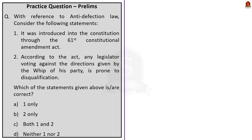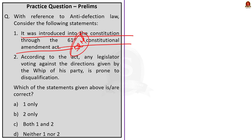The next question is about anti-defection law. Statement 1 says it was introduced through the 61st Constitutional Amendment Act — this is incorrect. It was introduced through the 52nd Constitutional Amendment Act during the prime ministership of Rajiv Gandhi. Statement 2 says any legislator voting against the directions given by the whip of his party is prone to disqualification — this is correct, as per provisions of anti-defection law. The correct answer is option B, two only.